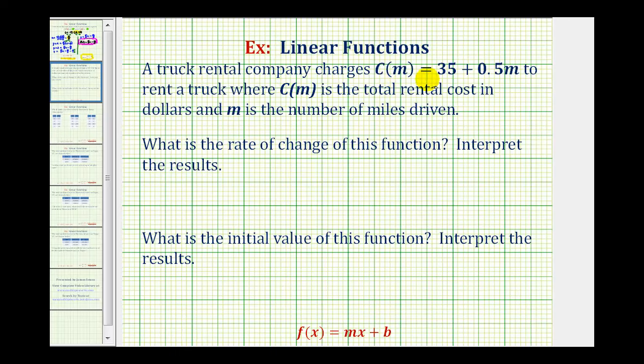A truck rental company charges C(m) = 35 + 0.5m to rent a truck where C(m) is the total rental cost in dollars and m is the number of miles driven. We're asked to determine the rate of change of the function and interpret the results, and then determine the initial value of the function and interpret the results.